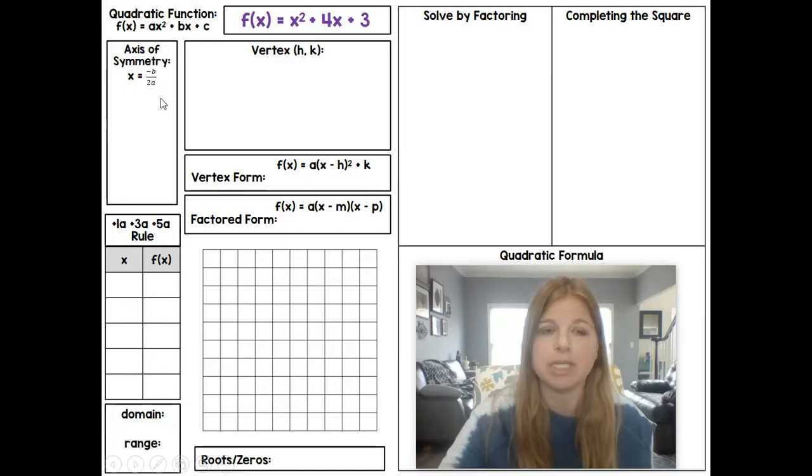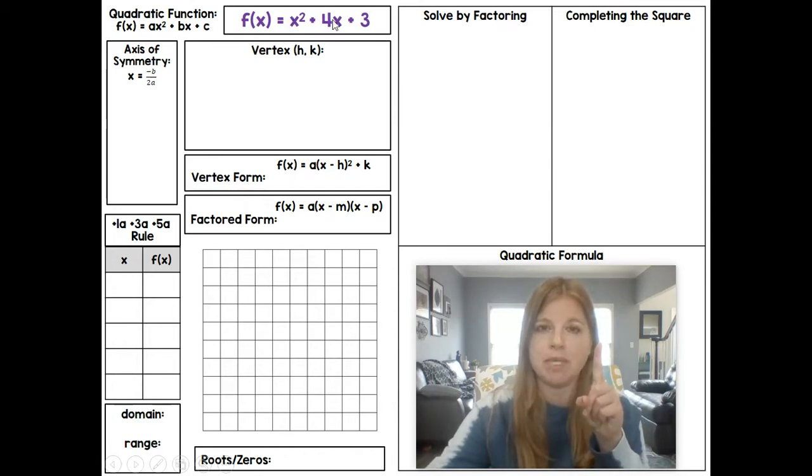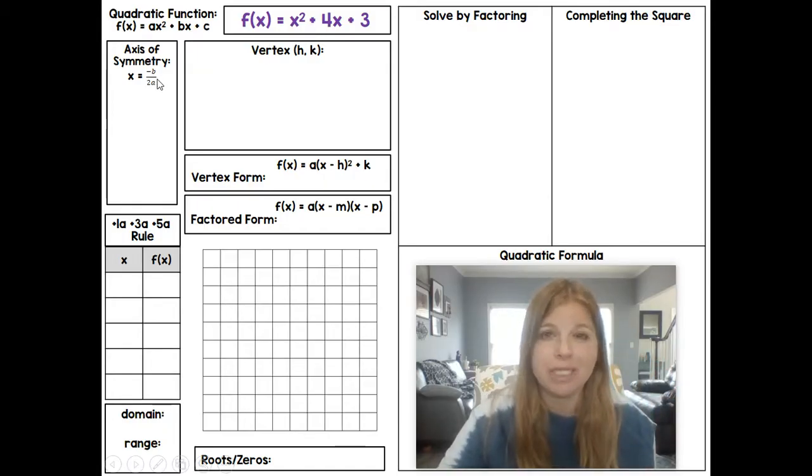And remember, the axis of symmetry is a tiny little formula. It's just x = -b / 2a. So if I look at this function, I should be able to see that my a value is 1, my b value is 4, and my c value is 3. So as long as I know that my a is 1, my b is 4, and my c is 3, I plug that into the formula. I only need b and a, and I get my result.